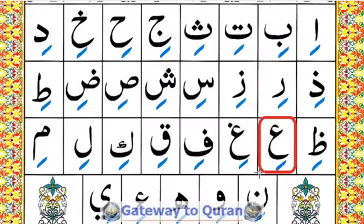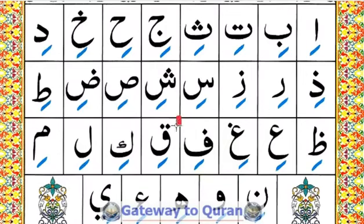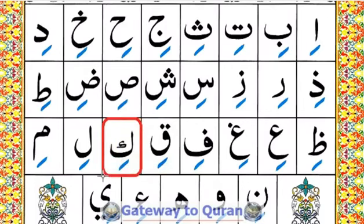Ayn kasra = i. Fa kasra = fi. Qaf kasra = qi. Kef kasra = ki.